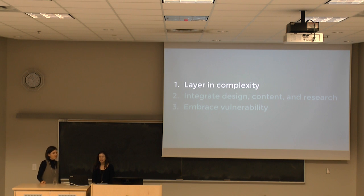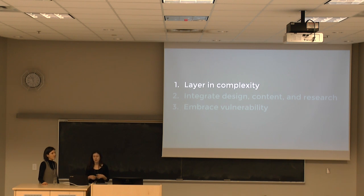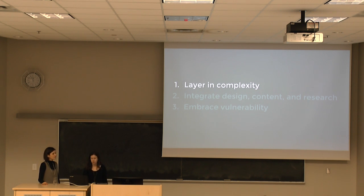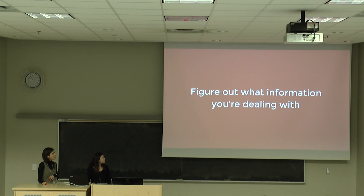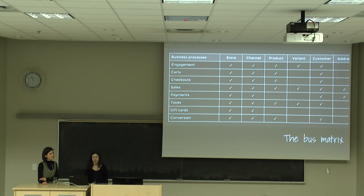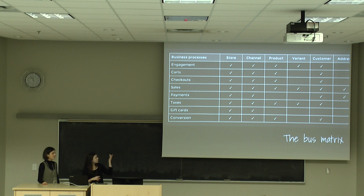So first, let's talk about how we tamed complexity in the Shopify reports. When we started working on the project, it didn't take long to realize we were dealing with a pretty complex IA — data spanning several categories from payments and taxes to conversion and traffic. We first had to figure out what information we were dealing with and define the high-level architecture. We spent a lot of time looking at which reports currently existed on Shopify. We took something called a bus matrix, which our data team handed over to us to understand how the dimensional modeling was working.